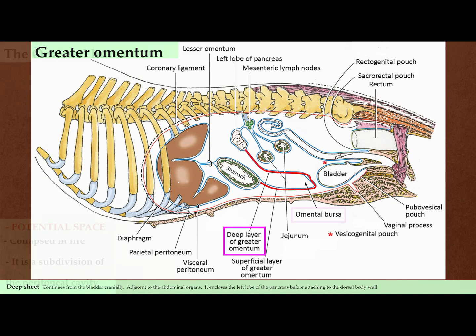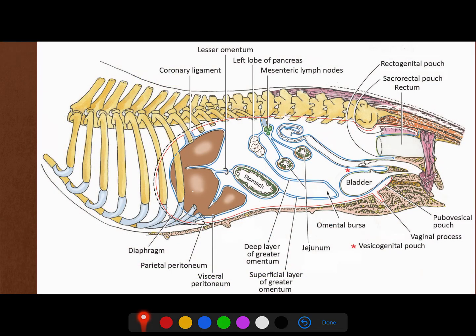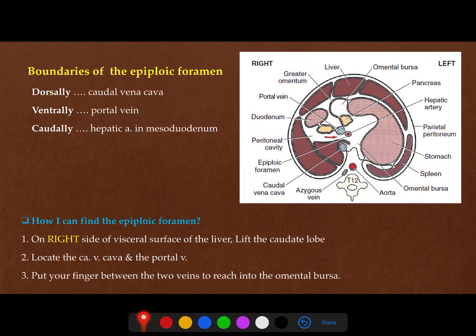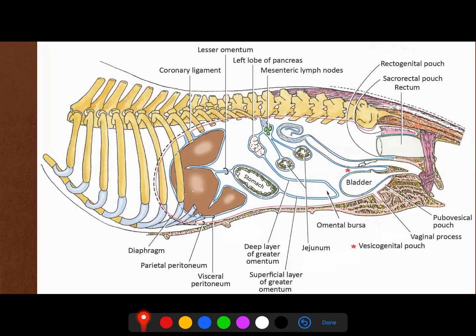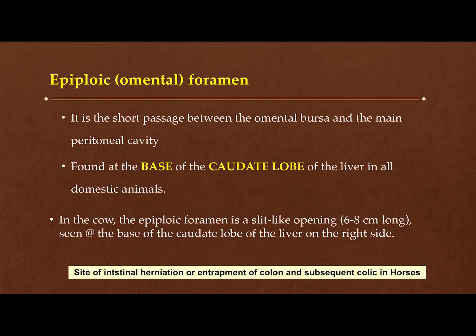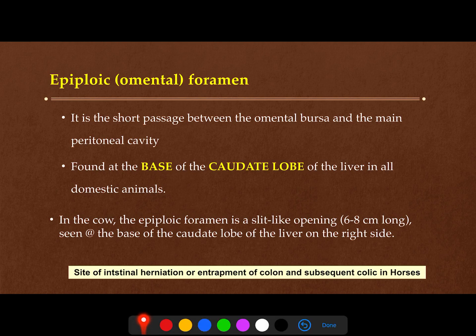The epiploic foramen is the narrow entrance to the omental bursa. Sometimes this epiploic foramen allows parts of the intestine to pass through and get trapped within the omental bursa, and this strangulation will cause colic and problems in different animals, even in humans. So the epiploic foramen is a short passage between the omental bursa and the main peritoneal cavity.